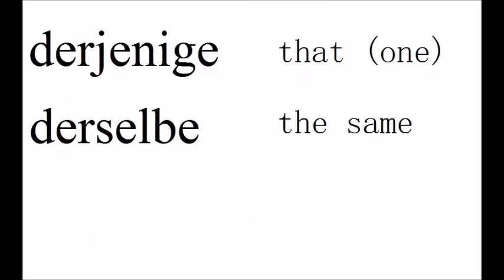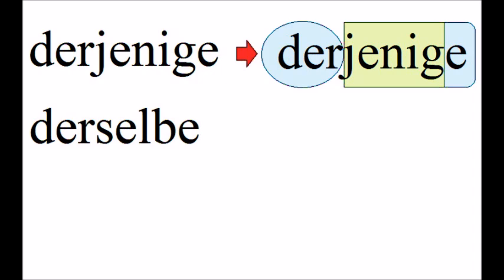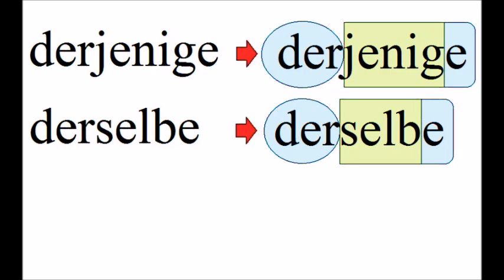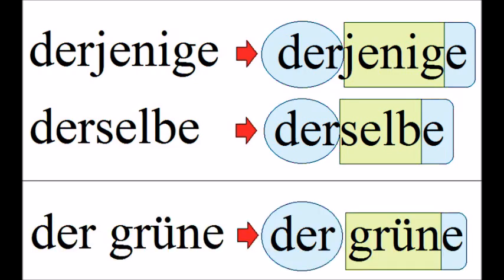Then there are two more articles that are a bit different in concept. 'Derjenige' means 'the one' or 'that one', and 'derselbe' means 'the same'. They look like an article combined with an adjective, and that is exactly how you use them — but you write and speak them as one word. To compare: 'derjenige', 'derselbe', versus a regular adjective like 'der grüne' meaning 'the green'.